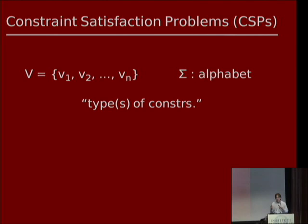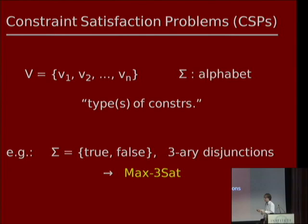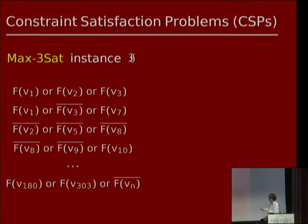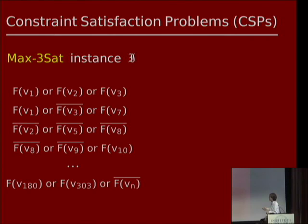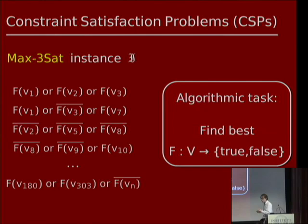For example, if sigma is {true, false} and the constraints are three-ary Boolean disjunctions, we call the associated CSP Max-3SAT. The instance is a list of constraints — Boolean disjunctions of arity 3 — and the task is to find an assignment to each variable from the alphabet that makes as many constraints true (satisfied) as possible. Another example: if sigma is the field of size 2 (0 and 1 mod 2) and constraints are three-variable linear equations, the associated task is called Max-3Lin-mod-2.